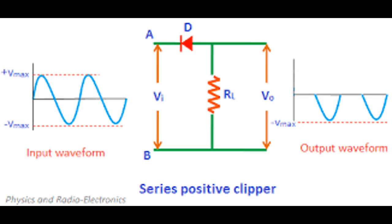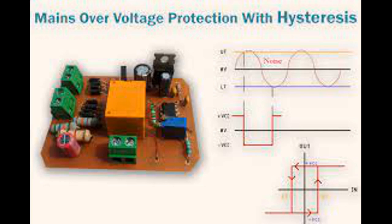Clipper circuits are the circuit that clip off or removes a portion of an input signal without causing any distortion to the remaining part of the waveform. These are also known as clippers, clipping circuits, limiters, slicers, etc.